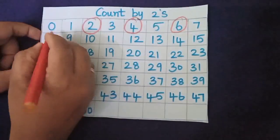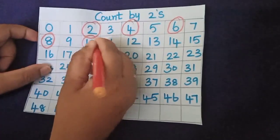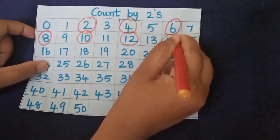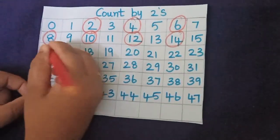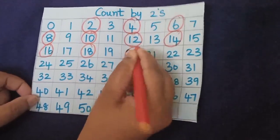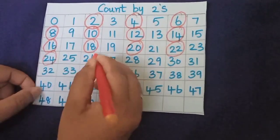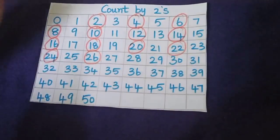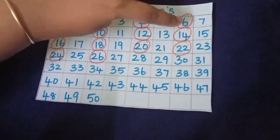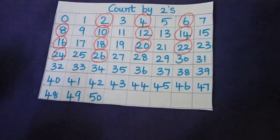Skip 7, jump on 8. Skip the next number, jump on 10. Skip the next number, jump on 12. Then 14. Yes, 16. Then skip and jump on 18. Skip and jump. So what are the count-by-2 numbers? See: 2, 4, 6, 8, 10, 12, 14, 16, 18, 20. Like this it goes on.